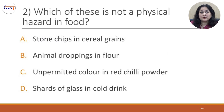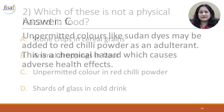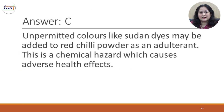Question 2: Which of these is not a physical hazard in food? A. Stone chips in cereal grains. B. Animal droppings in flour. C. Unpermitted colour in red chilli powder. D. Shards of glass in cold drinks. The correct answer is C. Unpermitted colours like sudan dyes may be added to red chilli powder as an adulterant — this is a chemical hazard which can cause adverse health effects.